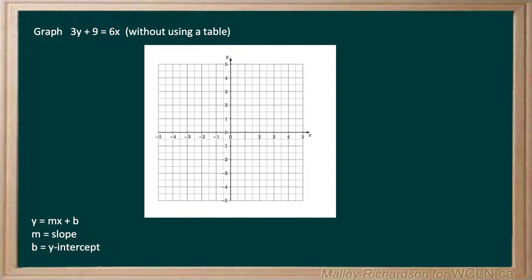But as we can see, our equation of 3y plus 9 equals 6x isn't in the form of mx plus b. So we need to turn this formula into y equals mx plus b by getting y by itself.